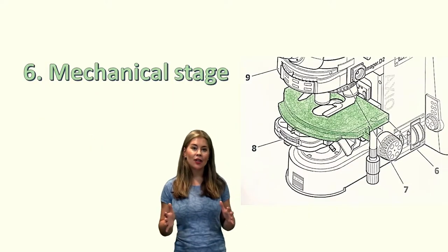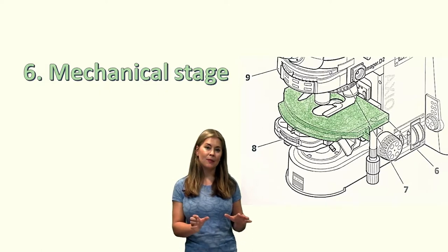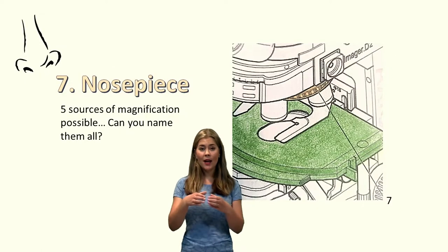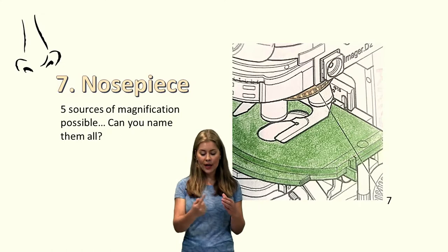Okay number six, the mechanical stage. So the mechanical stage houses your specimen. So when you've finished setting up your slide then you'll put that onto your stage and clip it into position. Above the stage is the nose piece. The nose piece is where all of the objective lenses attach to and you can rotate it around.